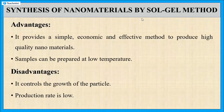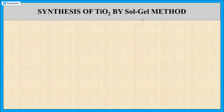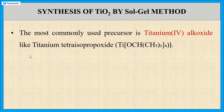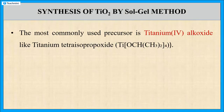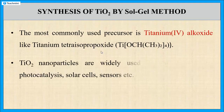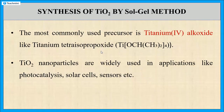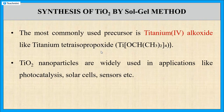By using the Sol-gel method we can prepare many nanomaterials, and one of the most common examples is titanium dioxide. Now let us see how to synthesize titanium dioxide using the Sol-gel method. The most commonly used starting material is titanium alkoxide, such as titanium tetra-isopropoxide, taken as the precursor. Titanium dioxide nanoparticles are widely used in applications like photocatalysis, solar cells, sensors, biomedical coatings, and self-cleaning surfaces.